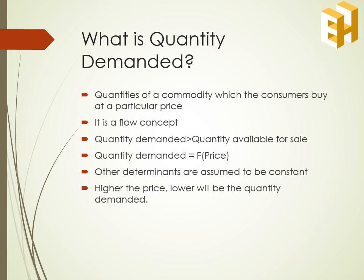Price is taken as the independent variable and quantity as the dependent variable. If we derive it mathematically, demand is expressed as Q = A − BP, where A is the intercept and B is the slope of the demand curve.